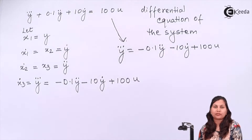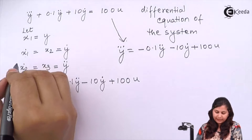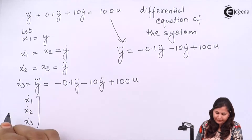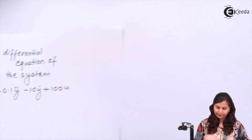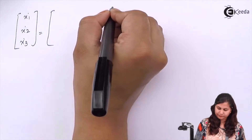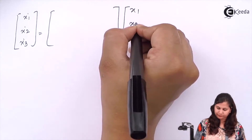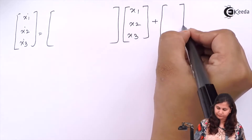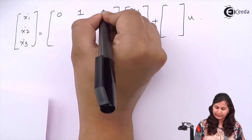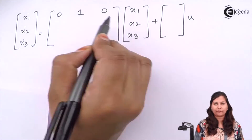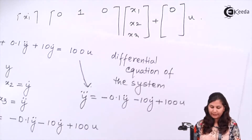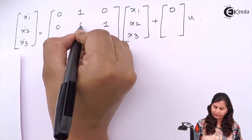Now to obtain the state space representation, we have three state variables and their derivatives. From these three equations we form the state equation matrix [ẋ1, ẋ2, ẋ3]. For ẋ1 = x2, the coefficients are [0, 1, 0] with u coefficient 0. For ẋ2 = x3, the coefficients are [0, 0, 1] with u coefficient 0.